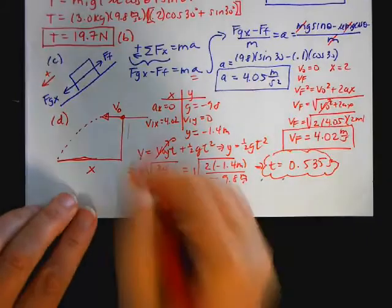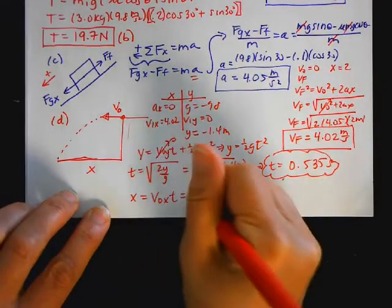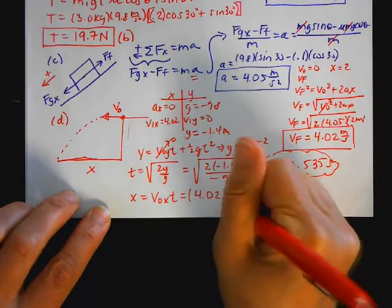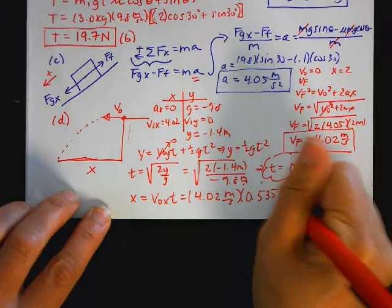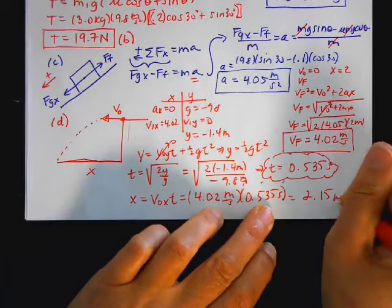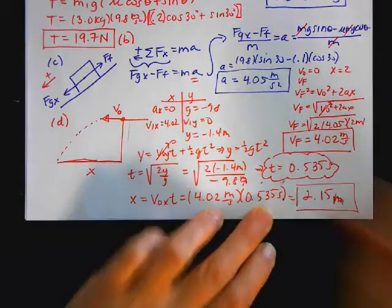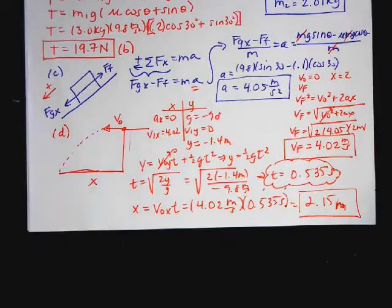And then the last thing I do is I say X is equal to V naught X T, which is 4.02 meters per second times 0.535 seconds, which is 2.15 meters. So the first part of this problem we did previously, the only difference here was now we had some values, because the last time we had it without numbers, and then at the end it became a projectile. And this is typical physics C type problems where you have different parts. First you're using Newton's laws. Then you're going to be using kinematics, and then you're going to be doing projectile motion. So you have a bunch of different things in one particular problem. And that's it. You just have to do it step by step.